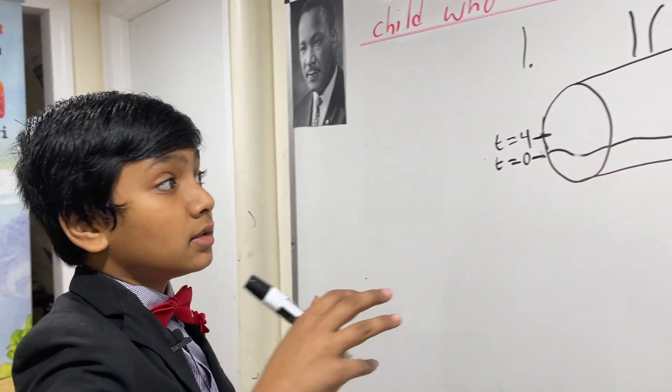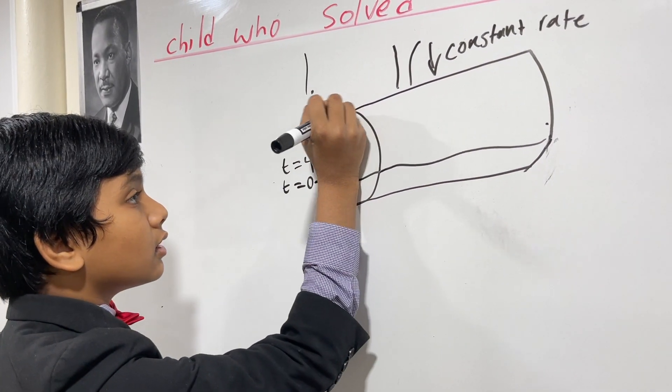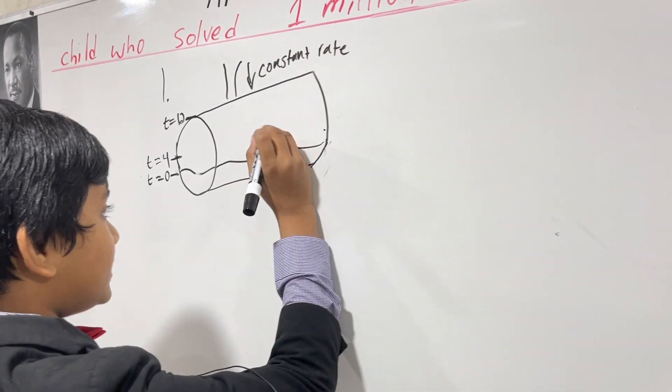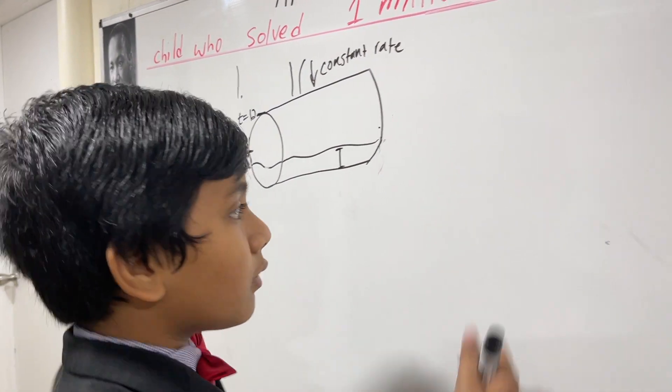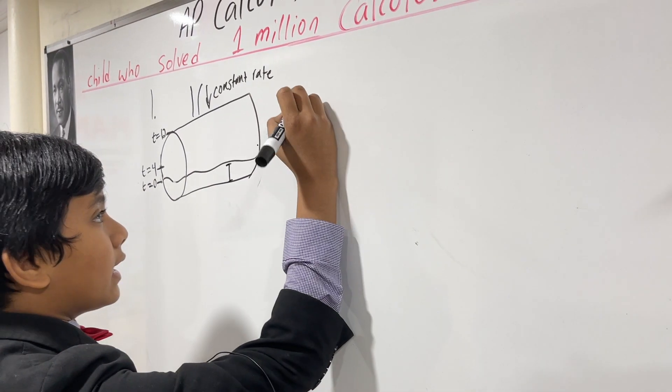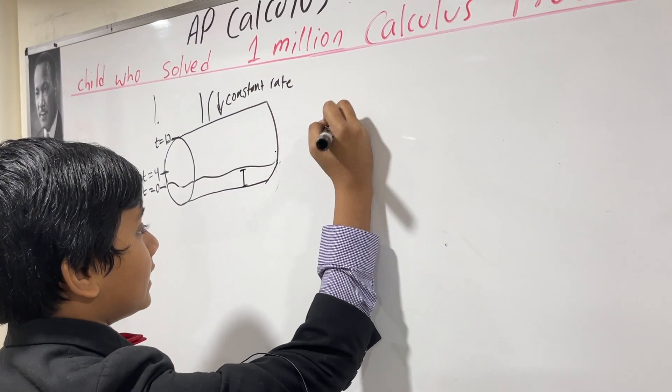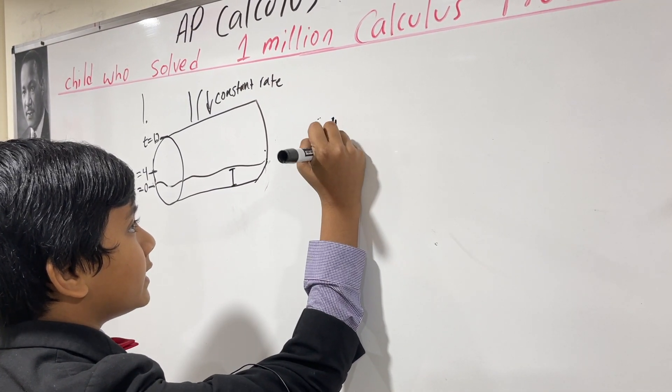And then finally, over here, h is the depth of the water. From what interval of t is dh/dt increasing?